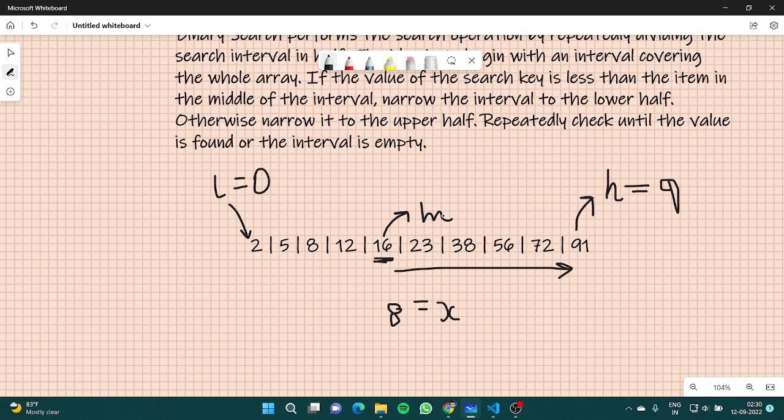So we discard this whole part and we will be searching in this part. Now my H would be this, my L would be this. I have reduced my interval. 0, 1, 2, 3. Now again I'll try to find M. What would be M here? M would be 3 plus 0 by 2, that is 1.